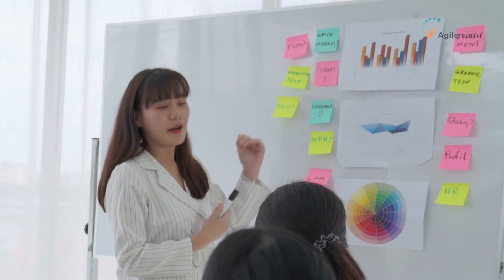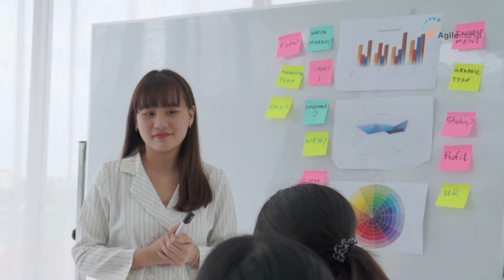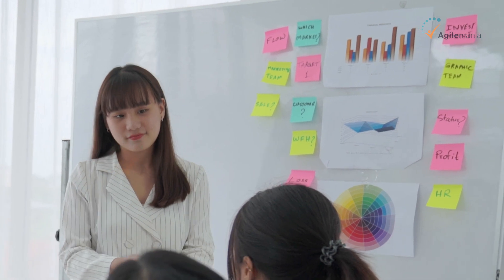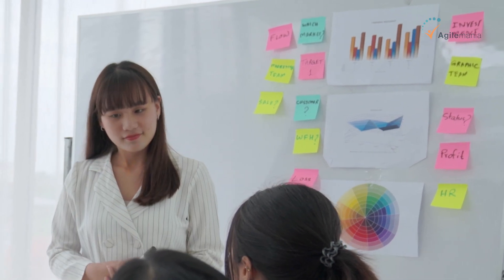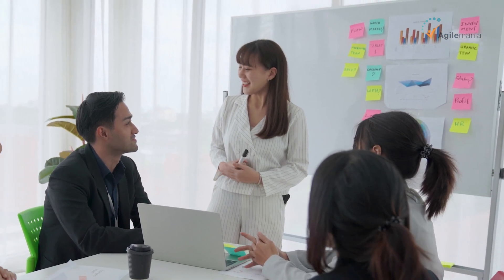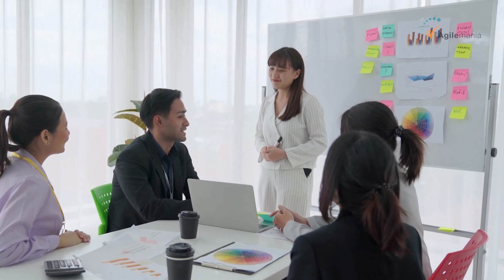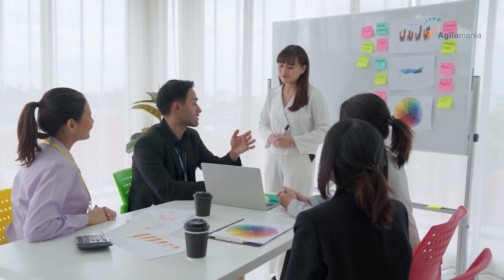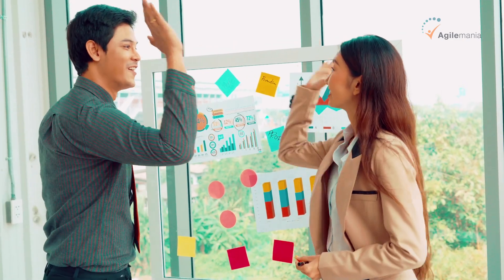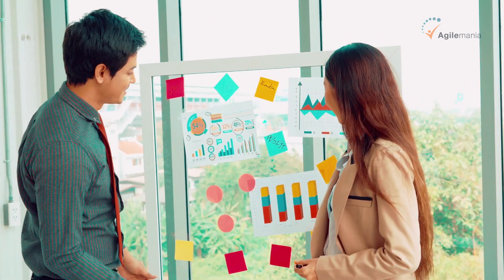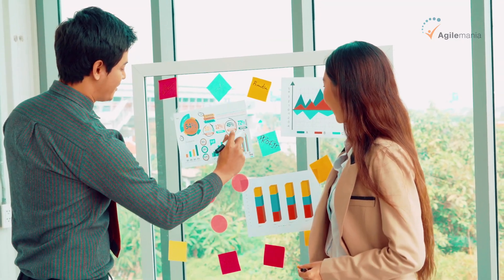If you go to a team on the first day and instead of teaching them what agile is you keep asking coaching questions like 'how can you implement agile?', they won't have the maturity to answer. You need a certain degree of maturity before powerful questions work. That's the Shu-Ha-Ri principle: Shu is training, Ha is coaching, Ri is advising mode.